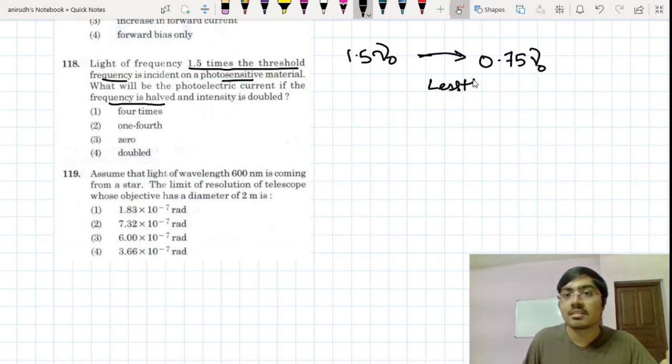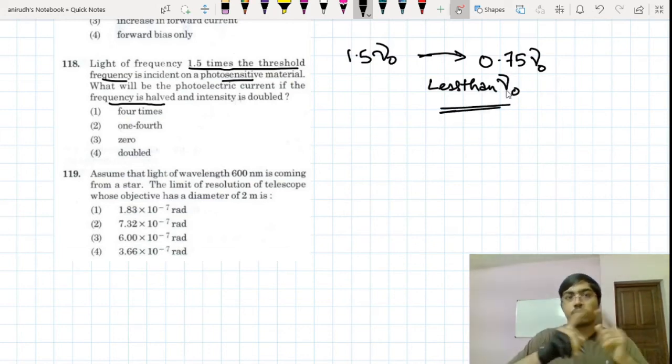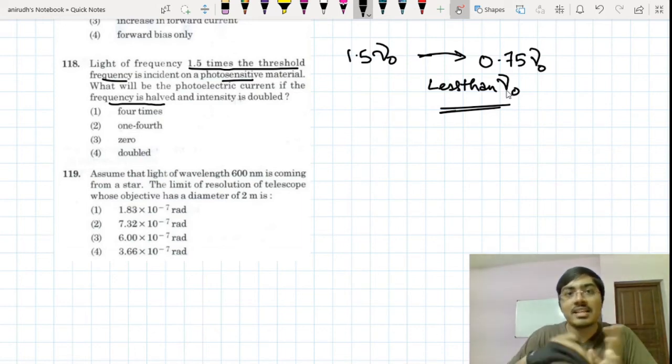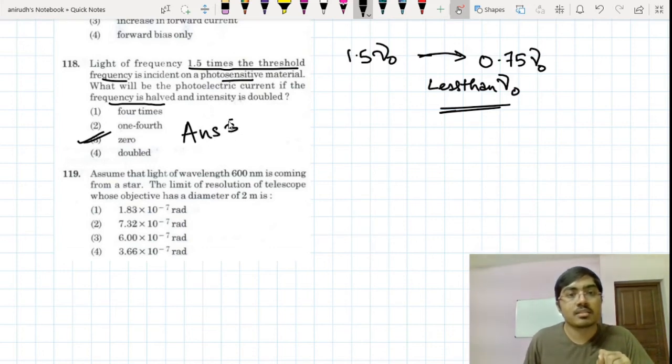So this is less than the threshold frequency. Now if a light is falling on a photoelectric material whose frequency is less than the threshold frequency, then how can there be current? It is not possible. So obviously the current is zero. So for this question my answer is option third, zero.